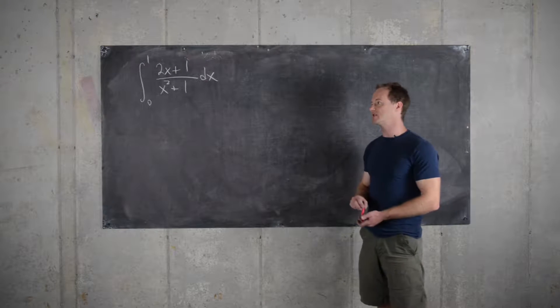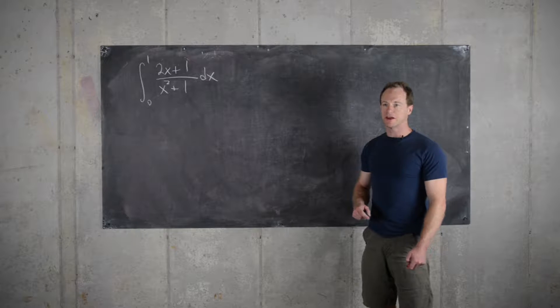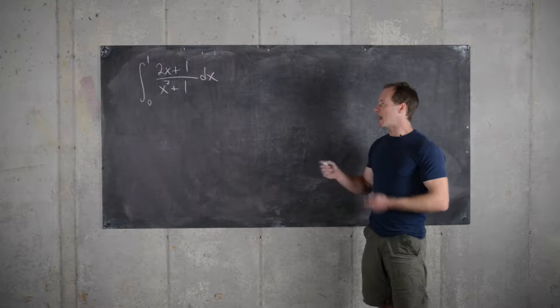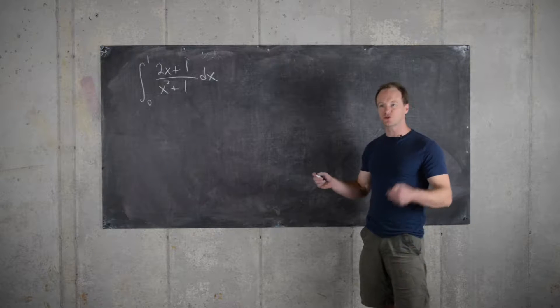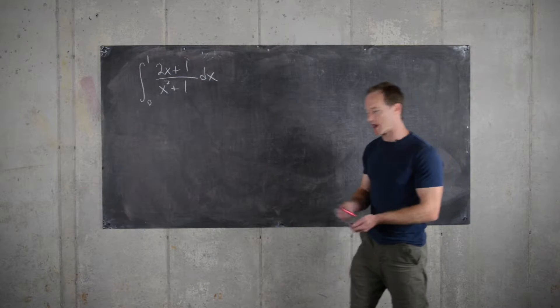Okay, so this seemingly simple integral has a fairly tricky solution. As you can maybe guess, it might be a u-substitution type integral since we have something in the denominator whose derivative is essentially in the numerator. So let's try it that way and see what happens.